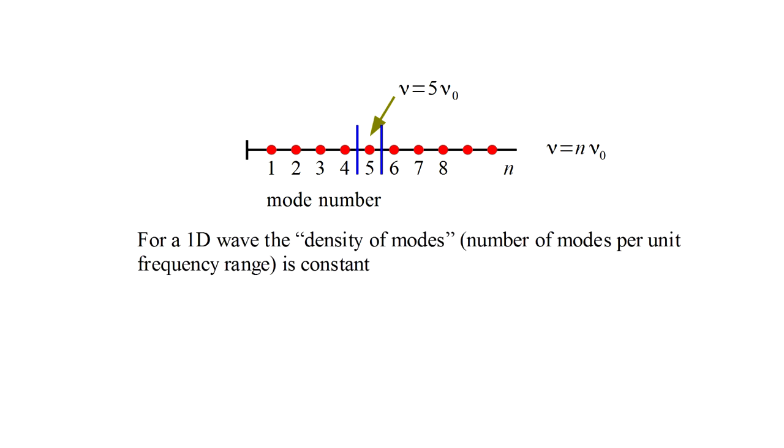For the one-dimensional case we see that the so-called density of modes is constant. If we move the blue lines to the left or right we'll, on average, get the same number of modes between them. We express this as rho of nu equals a constant a.